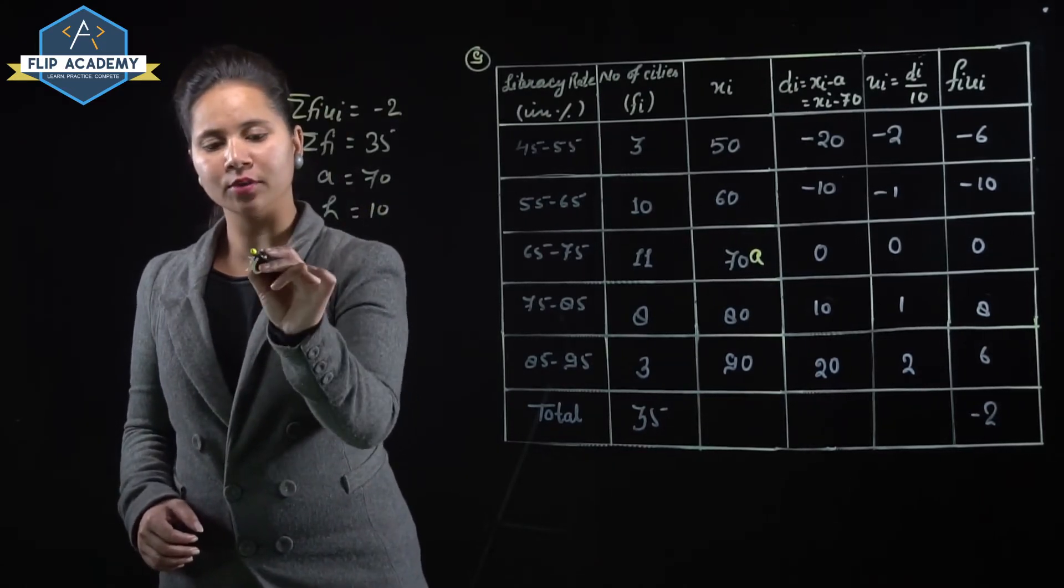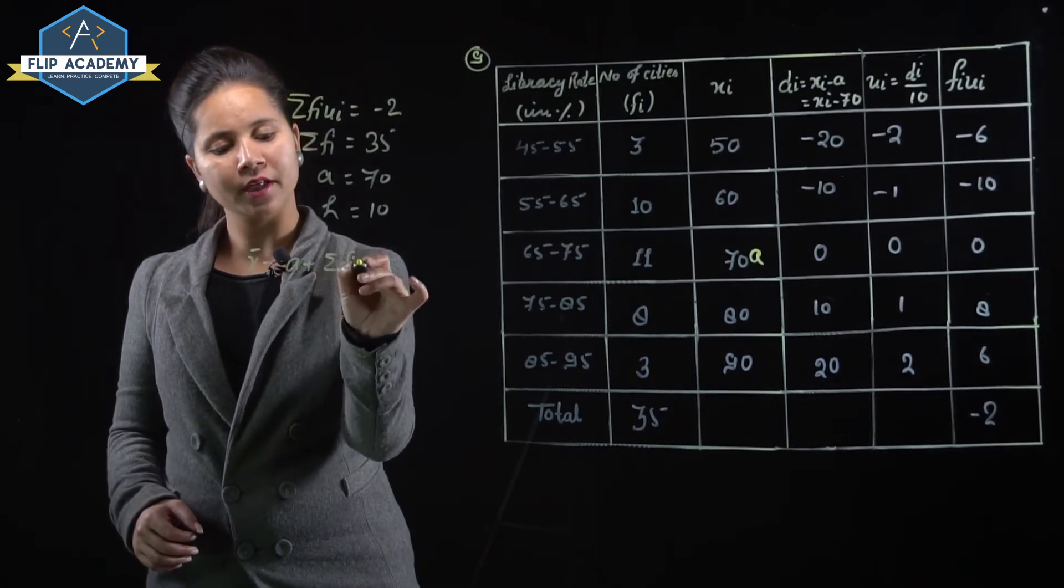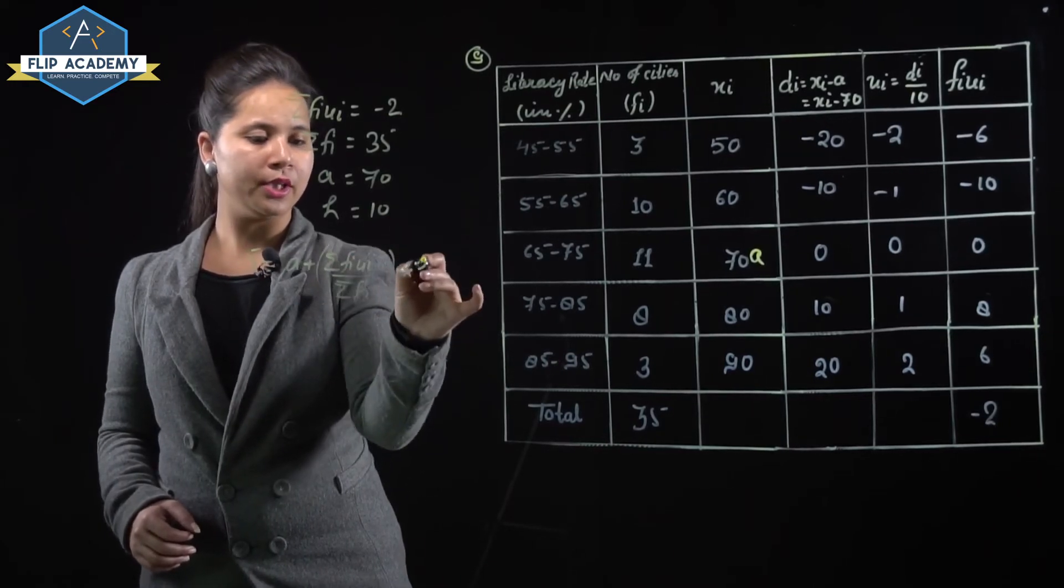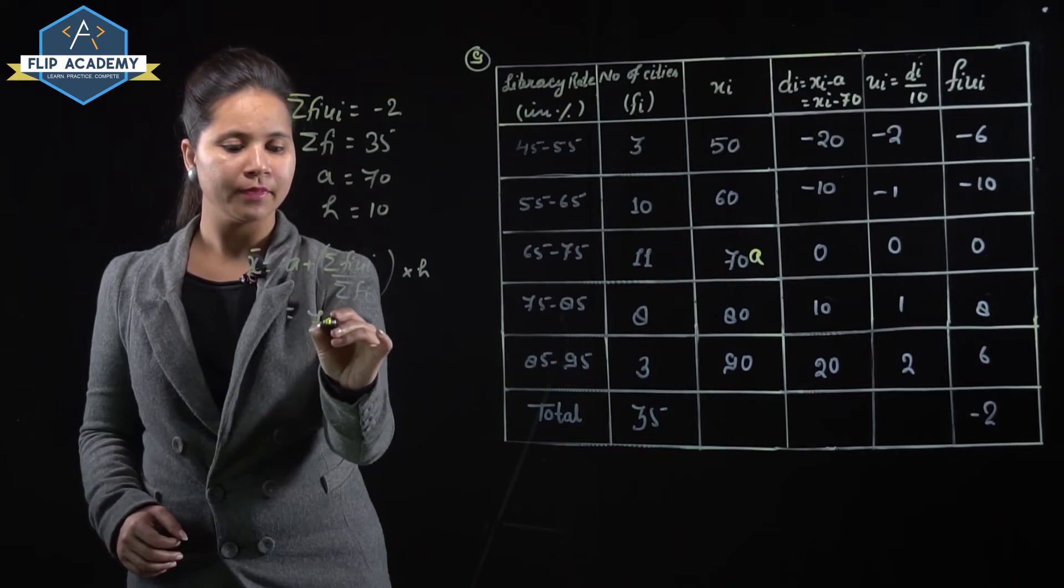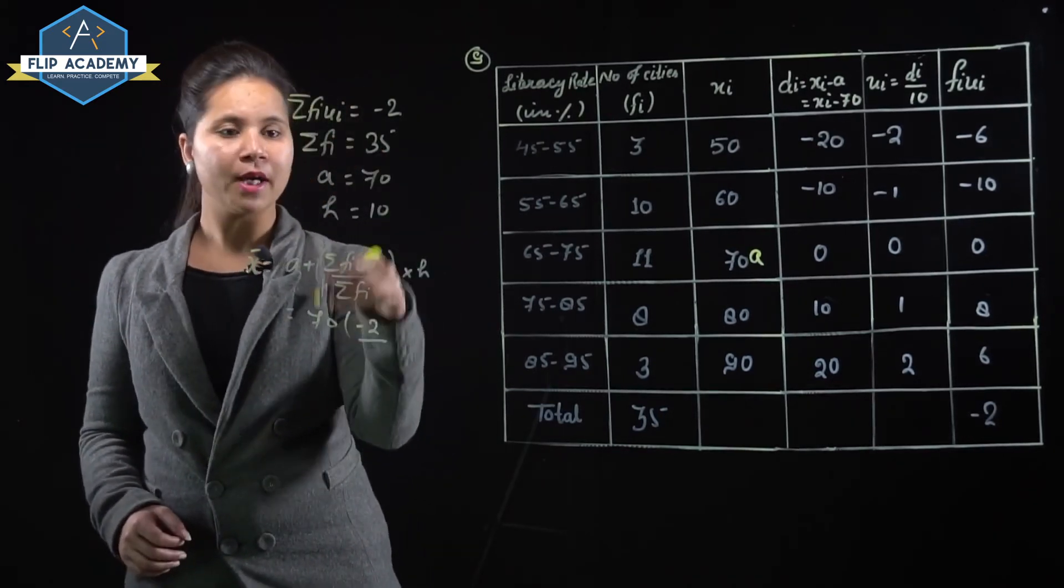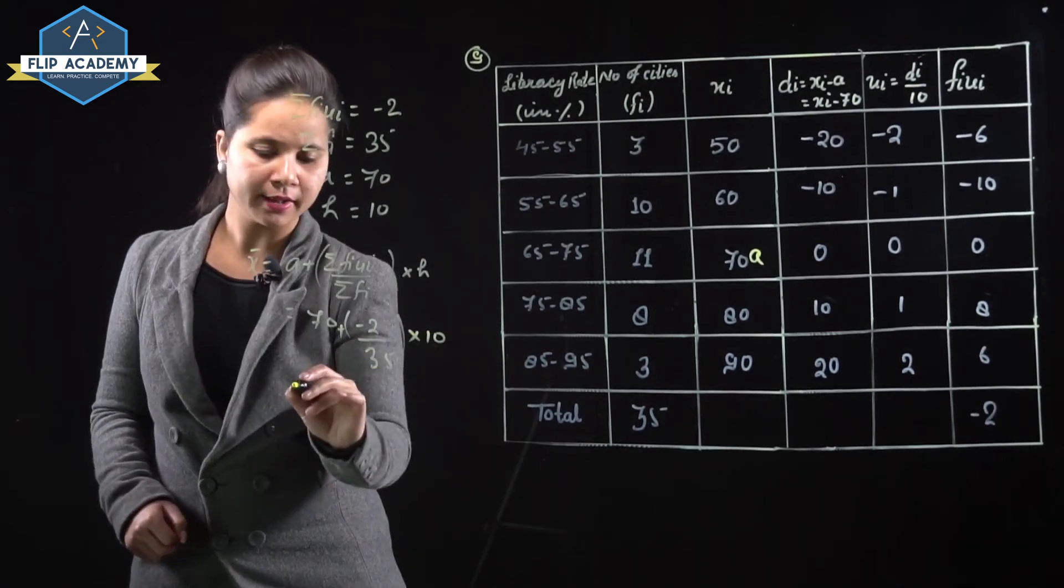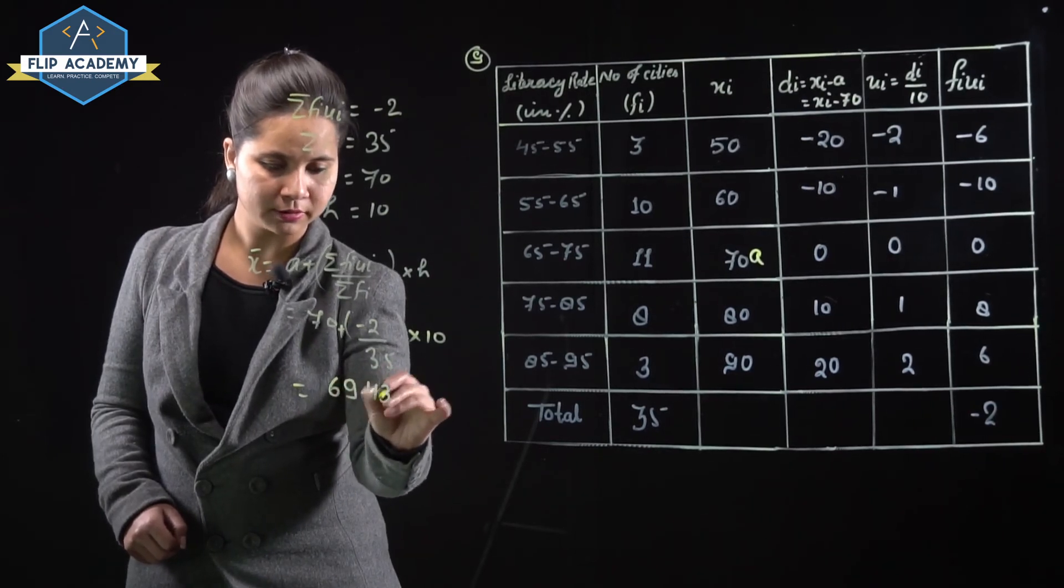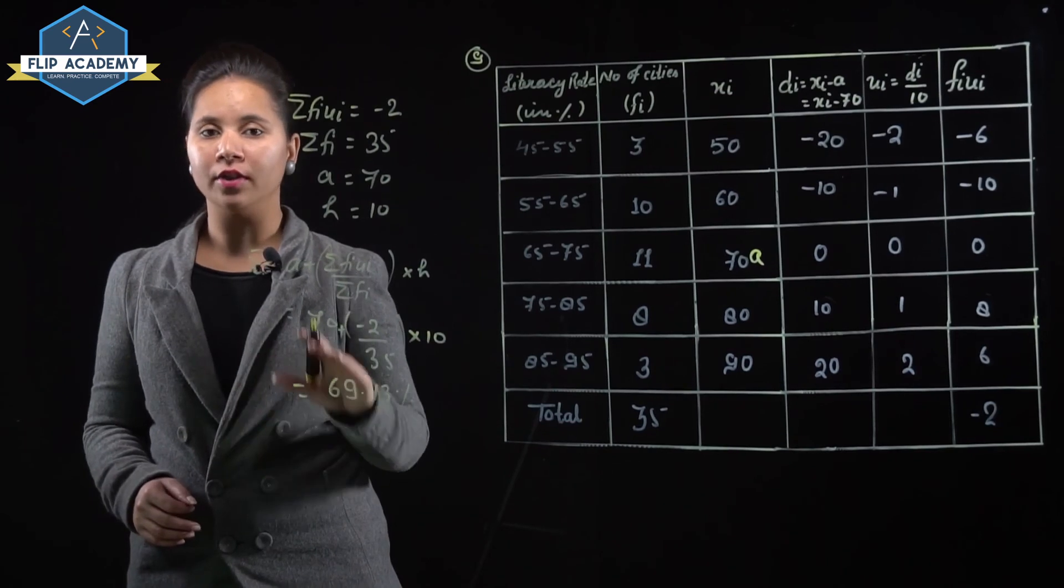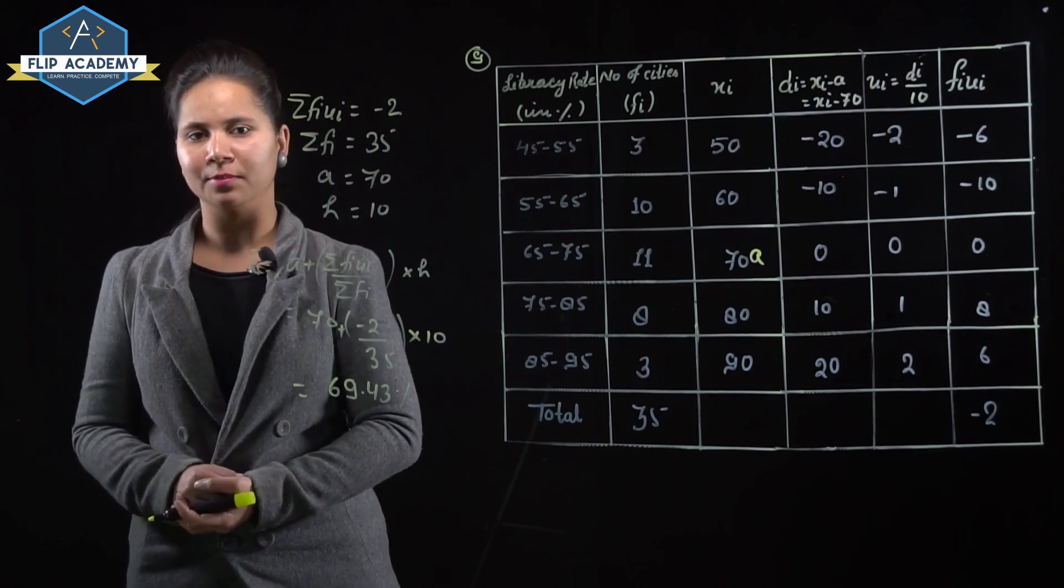Mean needs to be found for literacy rate. X mean equals a plus sigma fi ui upon sigma fi into h. A value is 70 plus sigma fi ui value minus 2 divided by sigma fi value 35 into h value 10. Simplified, it equals 69.43%. The mean literacy rate in percent equals 69.43%, and question number 9 is complete.